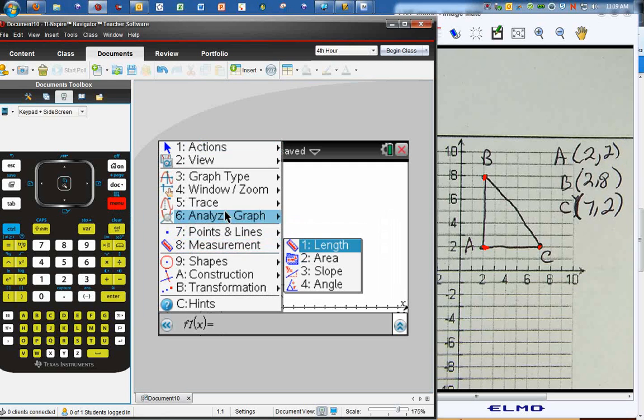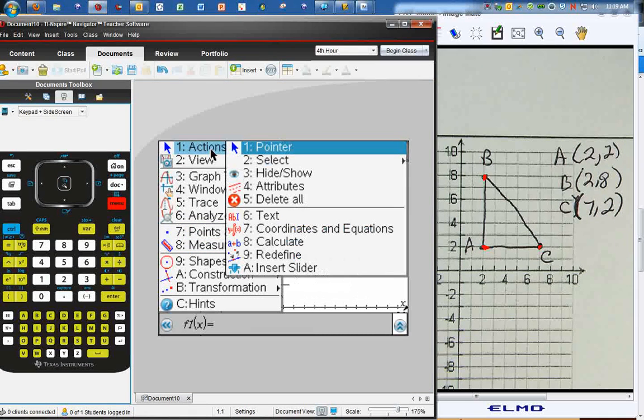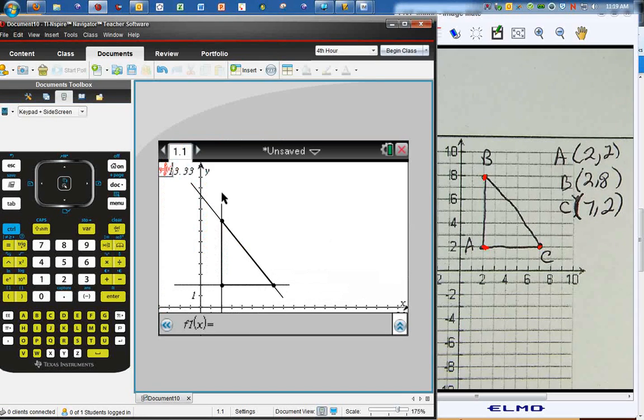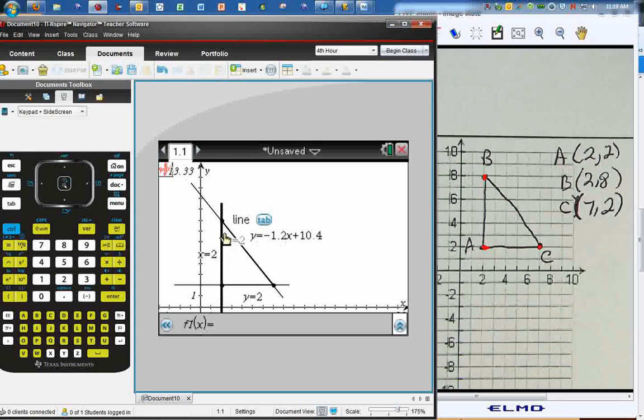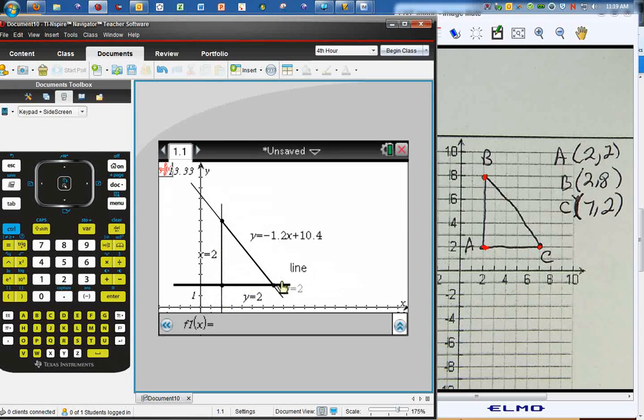I'll go to Coordinates and Equations. Click this line. There's one line. Click this line. There's that line. Click that line. There's that line. I have the three lines that form this triangle.